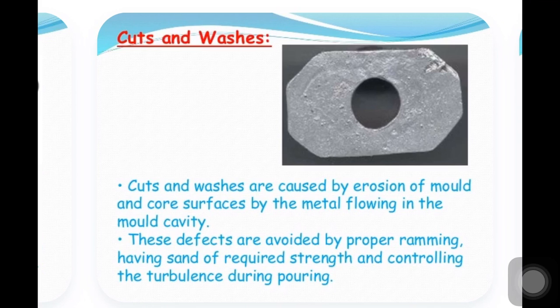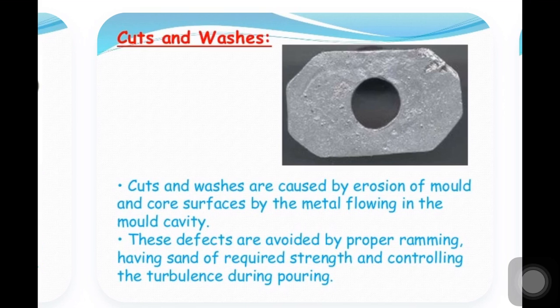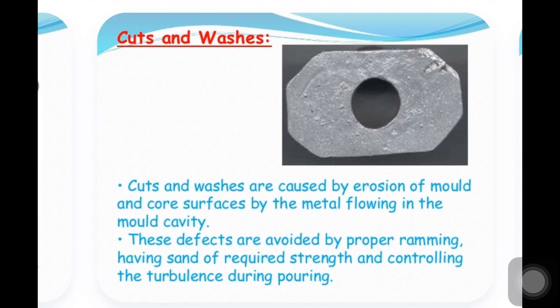The next defect is cuts and washes. Cuts and washes are caused by the erosion of the mould and core surfaces by metal flowing in the mould cavity. When the liquid molten metal forces cause the mould to erode completely, that results in cuts and washes. These defects are avoided by proper ramming using sand of required strength and by controlling turbulence during pouring.